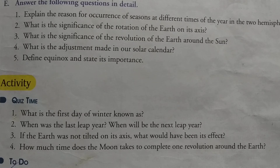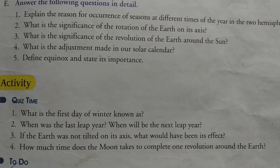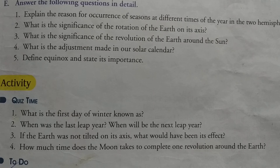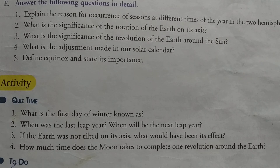Repeating the answer. The Earth takes 365 and one-fourth days to complete one revolution around the Sun. Full stop. We observe our calendar year in 365 days. Full stop.